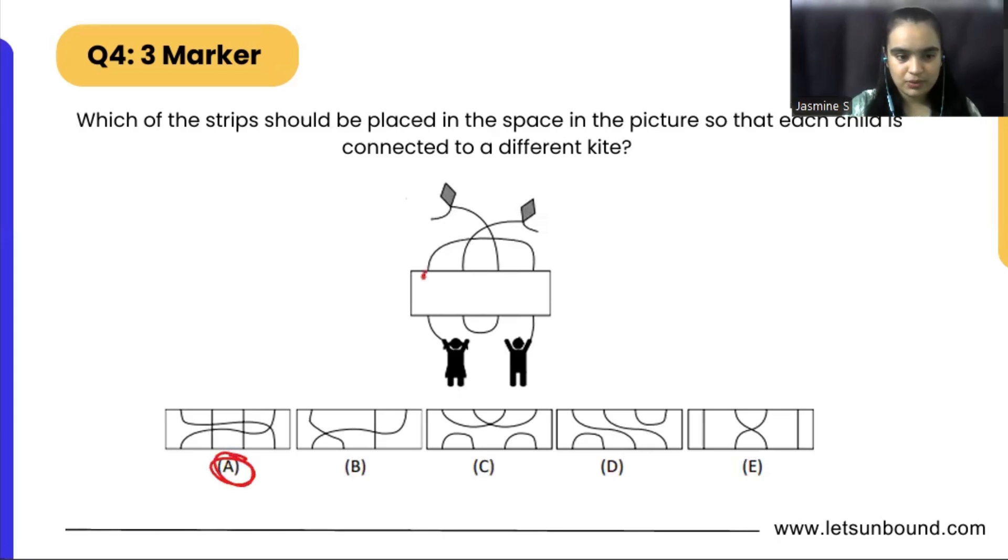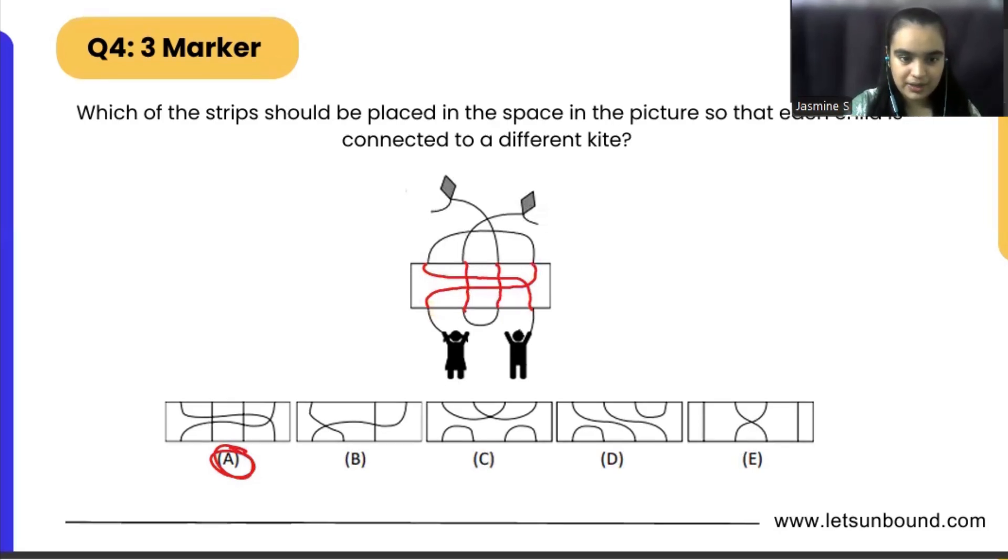So it is somewhere like this, correct. Now you just have to see if we are going to start from here, let's say, just follow the path. It will not work, they are not reaching to the kites only, correct. So this is not our correct answer.